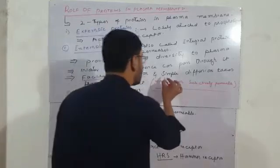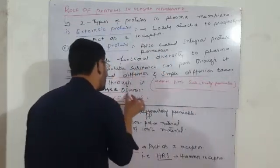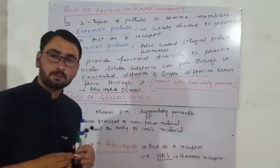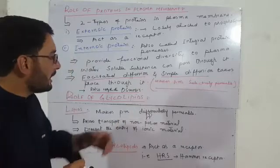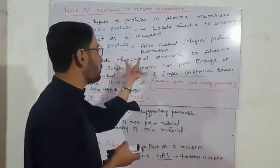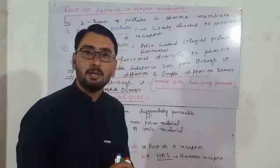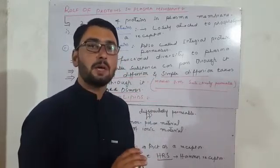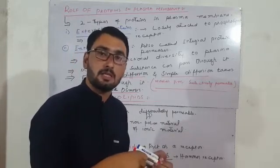Transport can occur via simple diffusion, osmosis, or active transport. The integral protein or intrinsic protein makes the membrane selectively permeable. The relevant properties here are semi-permeability and selective permeability.